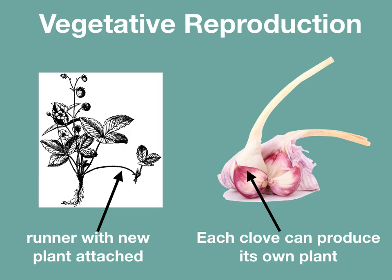You might have seen vegetative reproduction in your own garden. Many plants are able to reproduce without releasing seeds or spores. They have specialized features that allow them to pass on their genetic information to their offspring. For example, strawberries produce runners that allow new plants at the end of them to grow. Bulb plants like garlic are able to split their bulbs, creating more plants.